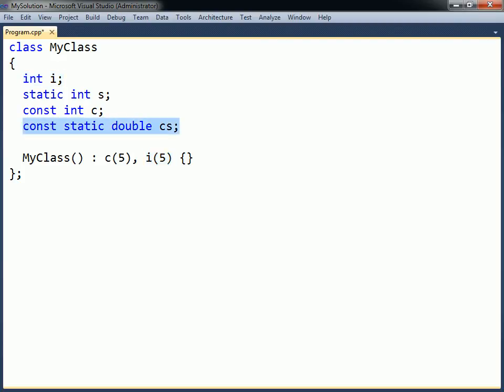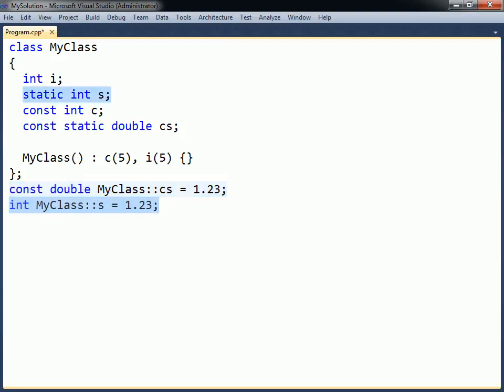A constant static field, on the other hand, must be defined outside of the class declaration, in the same way as non-constant static fields. The exception to this is when the constant static field is of the integer type, as such a field may also be initialized within the class at the same time as the field is declared.